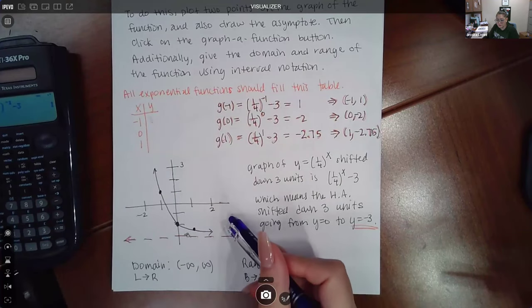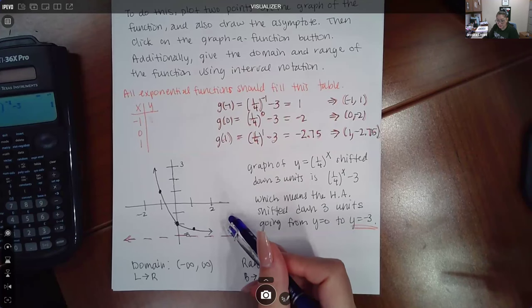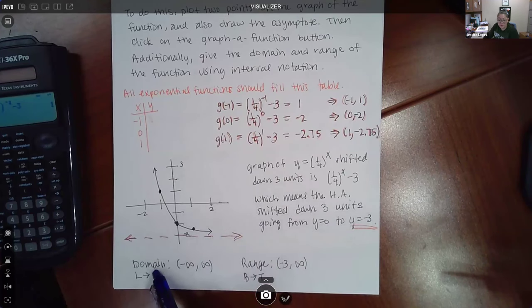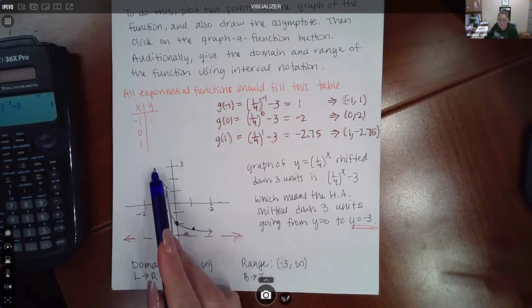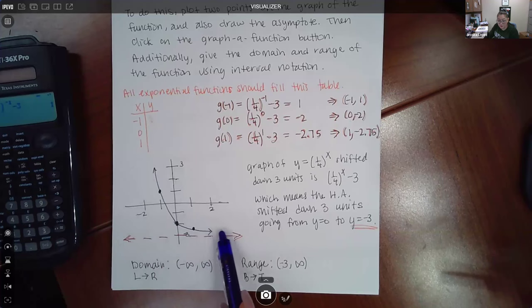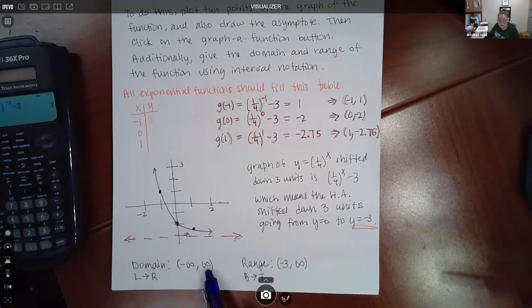Once you have this graph in Alex put in there correctly, remember to find your domain, which is the leftmost x value to the rightmost x value. This is going forever to the left and forever to the right, so it's negative infinity to infinity.